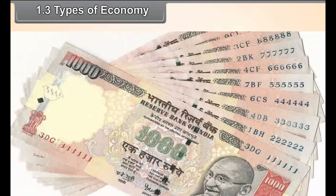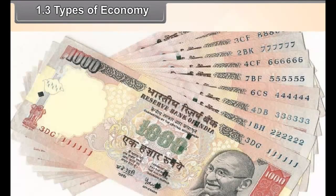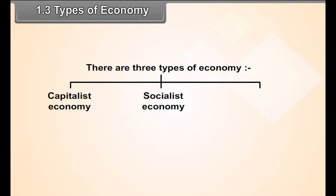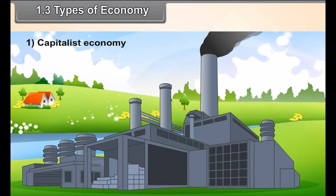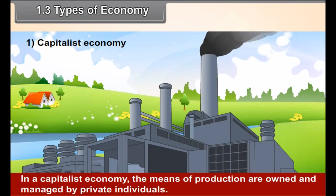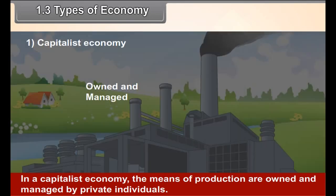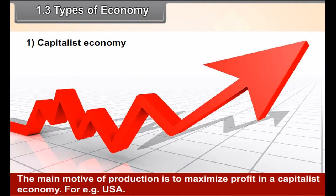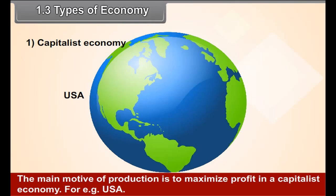1.3 Types of Economy. There are three types of economy: Capitalist Economy, Socialist Economy, and Mixed Economy. In a capitalist economy, the means of production are owned and managed by private individuals. The main motive of producers is to maximize profit in a capitalist economy. For example, USA.